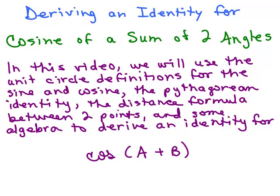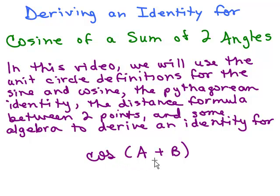In this video, we're going to derive an identity for the cosine of the sum of two angles. We'll be using the unit circle definition for the sine and cosine, the Pythagorean identity, and the distance formula between any two points from algebra, to find an identity for the cosine of A plus B.